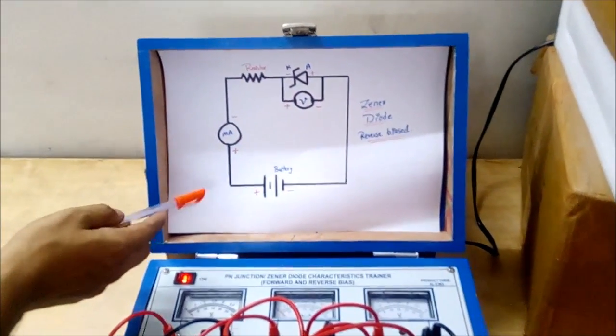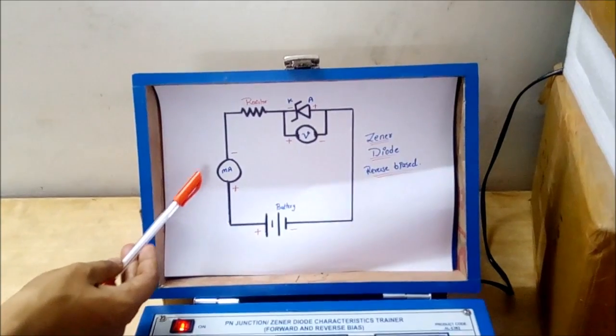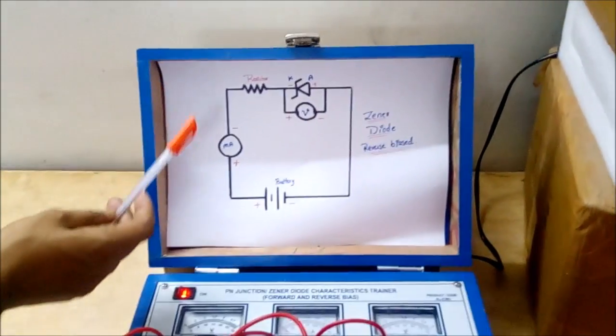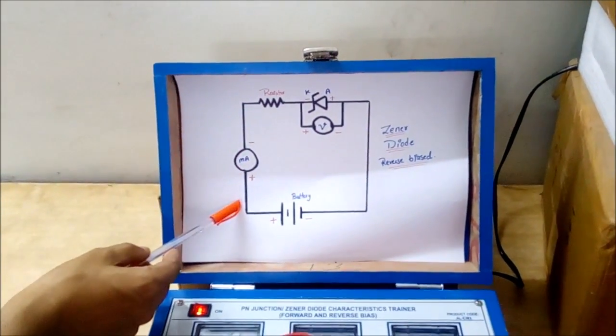Hello guys, this is the connection of the zener diode. In zener diode we have to keep in mind that it is operating on reverse bias. That would be the reverse bias connection would follow here.